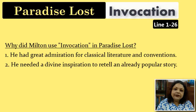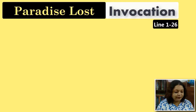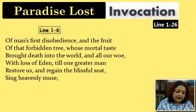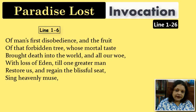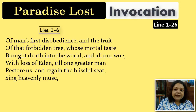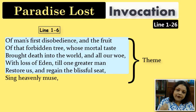The invocation begins: 'Of man's first disobedience and the fruit of that forbidden tree whose mortal taste brought death into the world and all our woe, with loss of Eden, till one greater man restore us and regain the blissful seat, sing heavenly muse.' Milton uses clause after clause until he finally mentions the heavenly muse, and in this single sentence he gives both the theme of the poem and the prayer itself.